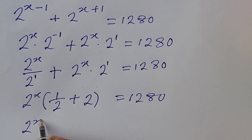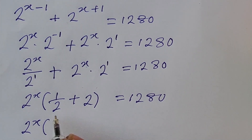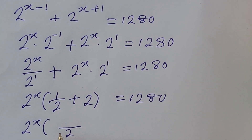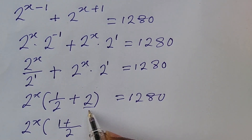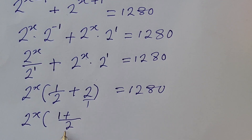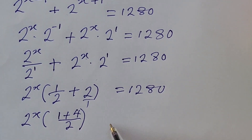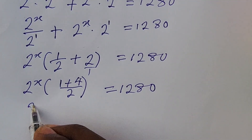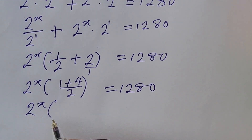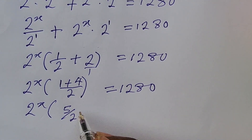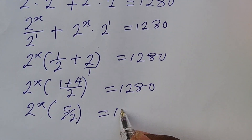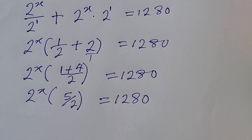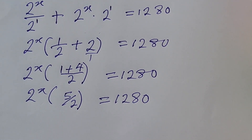Now we simplify inside the bracket. The LCM is 2, so 1 over 2 plus 2 gives us 1 over 2 plus 4 over 2, which equals 5 over 2. So we now have 2 to the power of x times 5 over 2, equal to 1280.